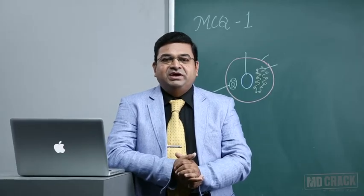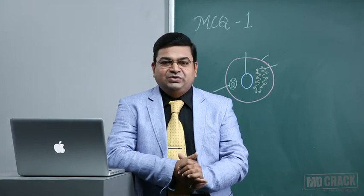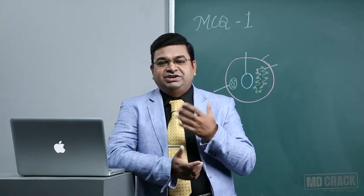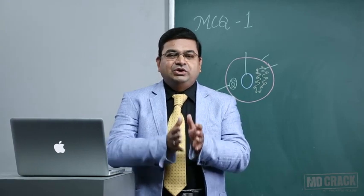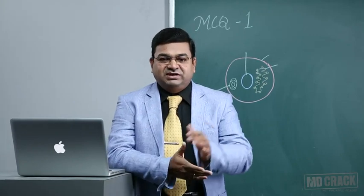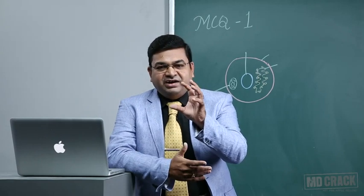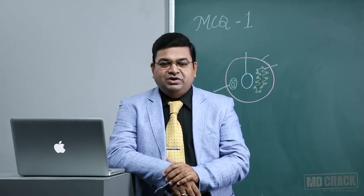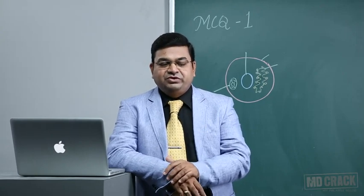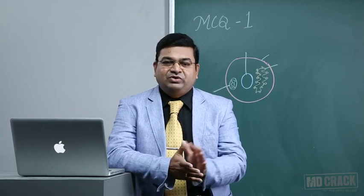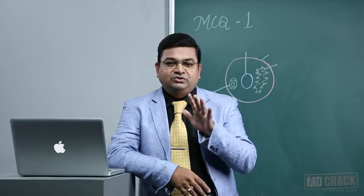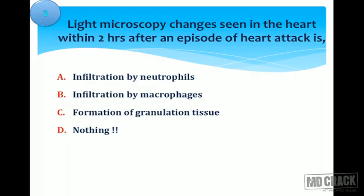Neutrophils begin to appear in a heart attack patient only after 12 to 24 hours. No changes are visible on light microscopy so early. The earliest change is contraction band necrosis, which takes almost four hours — and even then it is seen only on electron microscopy. After four hours, some coagulative necrosis may appear. Within two hours, the answer remains: nothing.